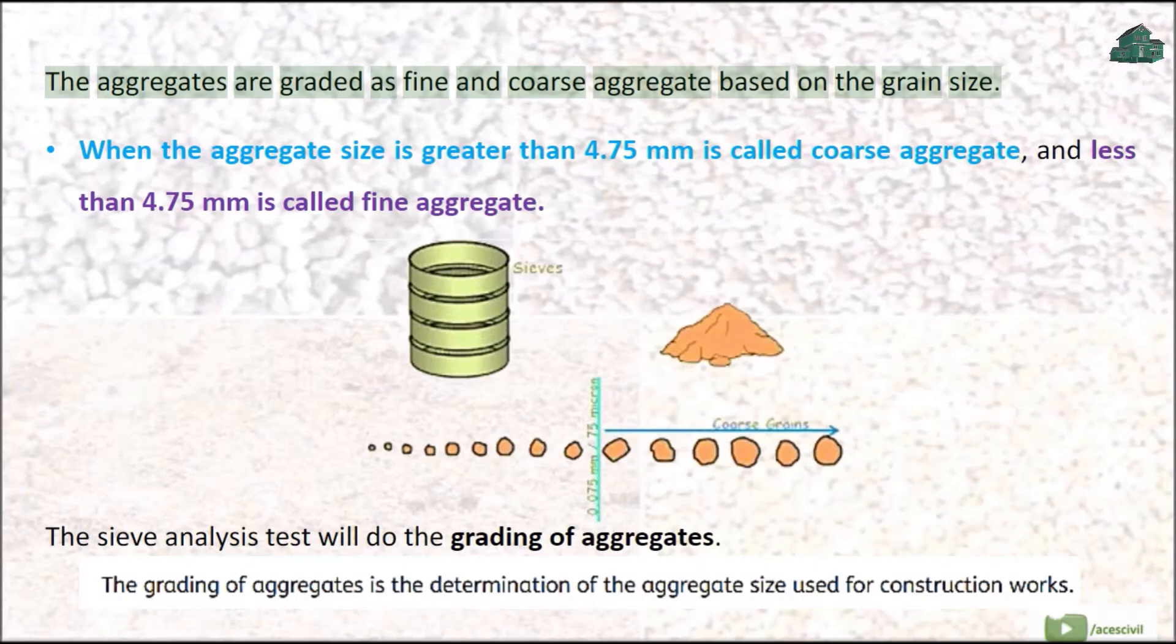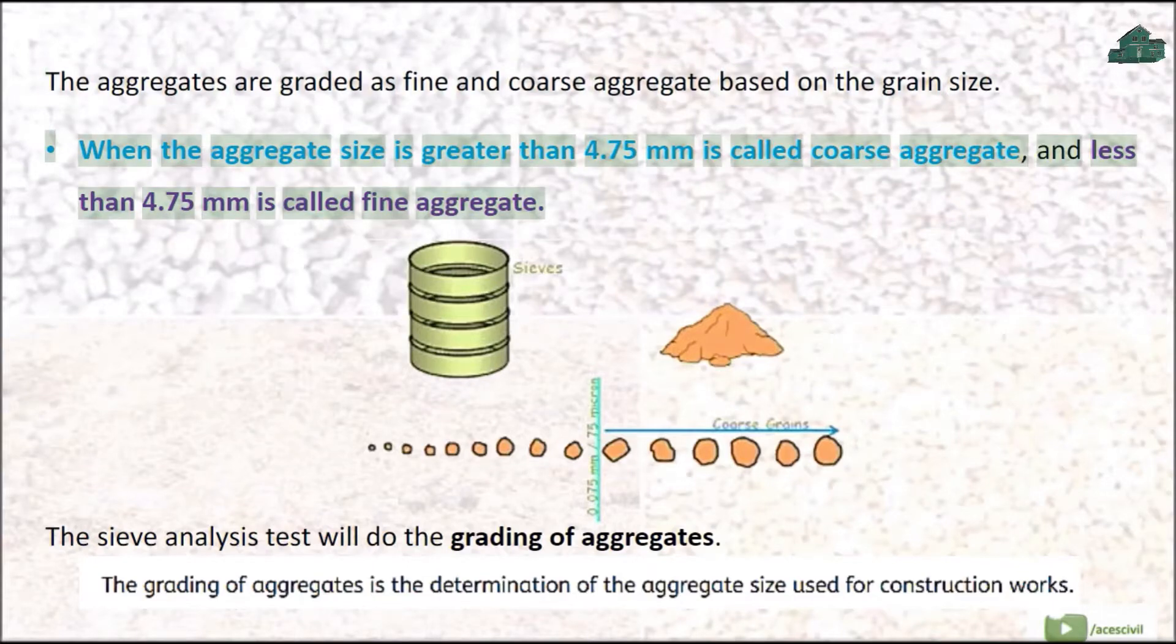The aggregates are graded as fine and coarse aggregate based on the grain size. When the aggregate size is greater than 4.75 mm it is called coarse aggregate, and less than 4.75 mm is called fine aggregate.